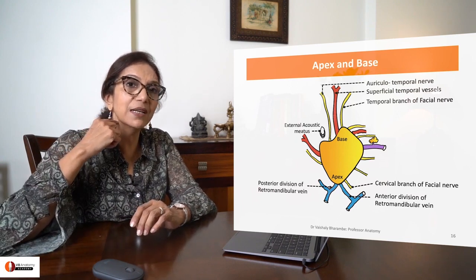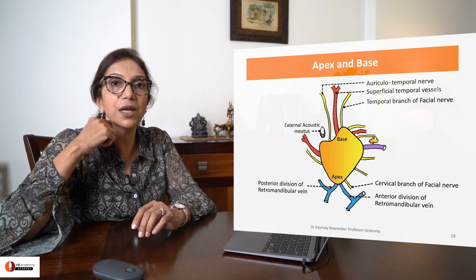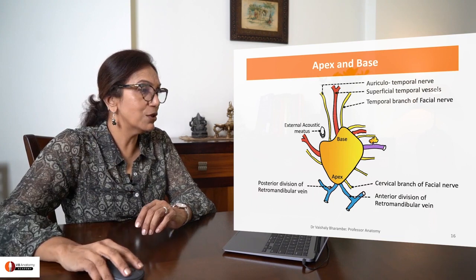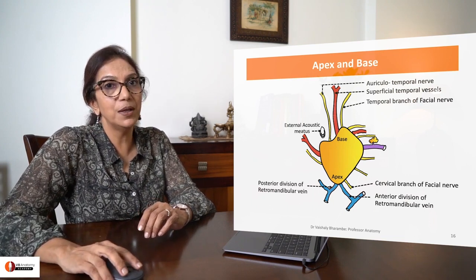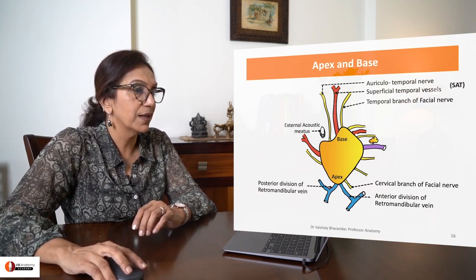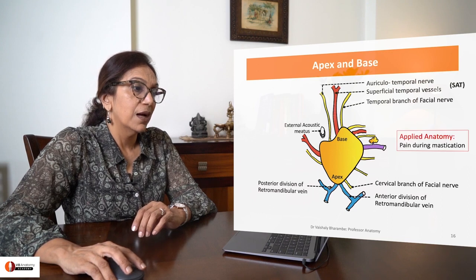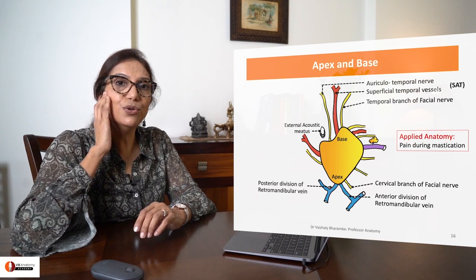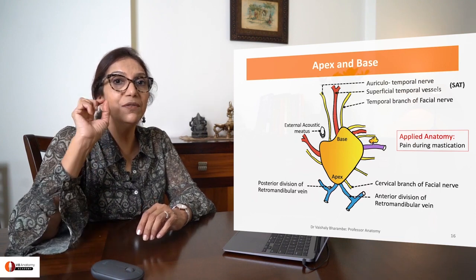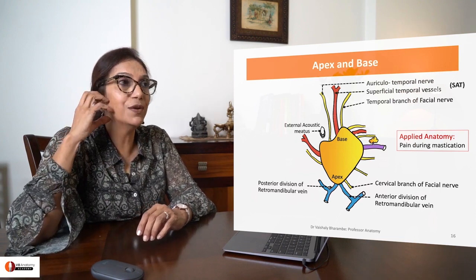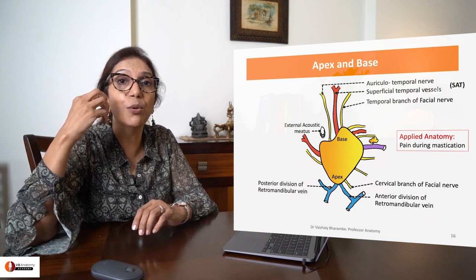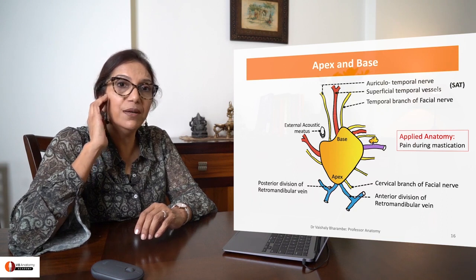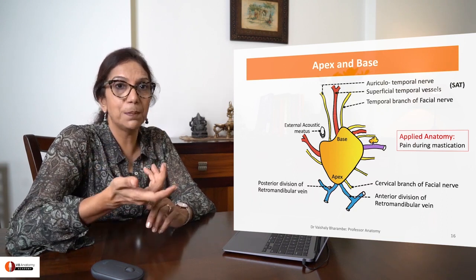The apex is directed downwards, almost entering into the carotid triangle. The base is directed upwards, abutting the external acoustic meatus and temporomandibular joint. Just remember that because the gland is so close to your temporomandibular joint, if the gland is inflamed, there is often a lot of pain during chewing or mastication — the joint is so close to the gland that it elicits pain.